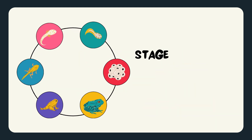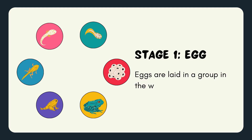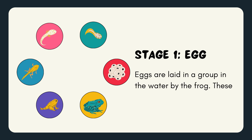Stage 1: Egg. Eggs are laid in a group in the water by the frog. These then hatch into tadpoles.